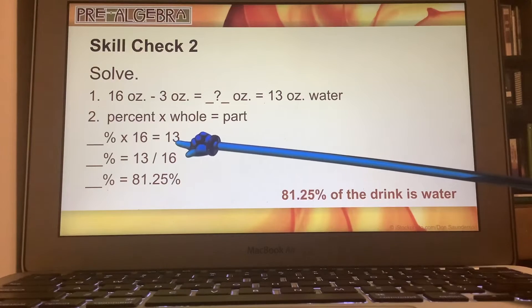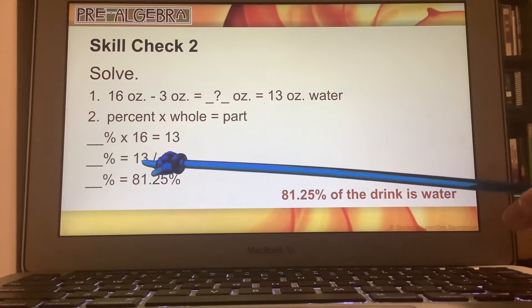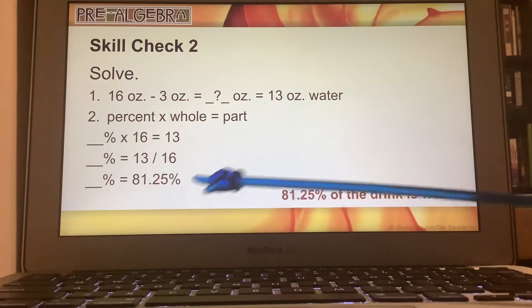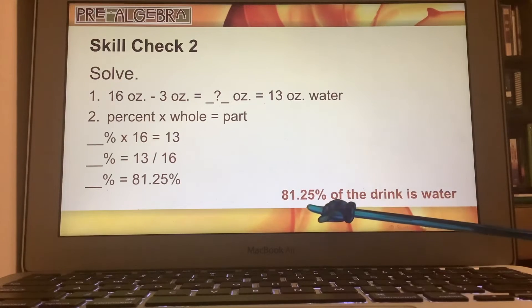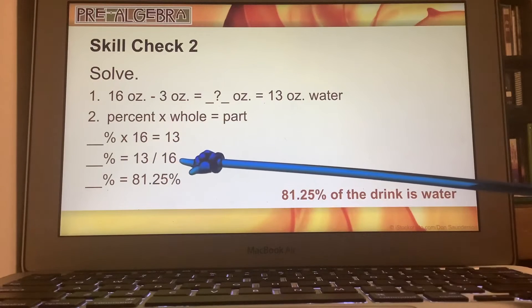which is 13 ounces. So what percent of the 13 out of 16 ounces is water? And so our final answer actually is, you take 13 divided by 16,